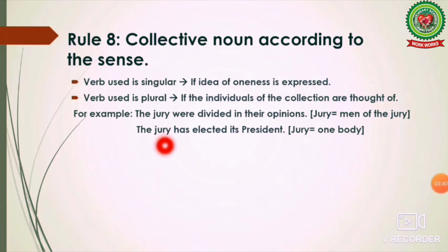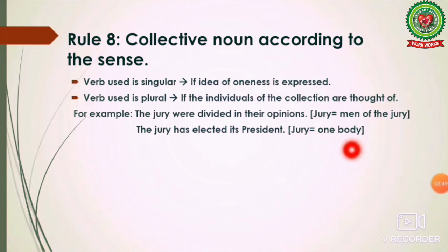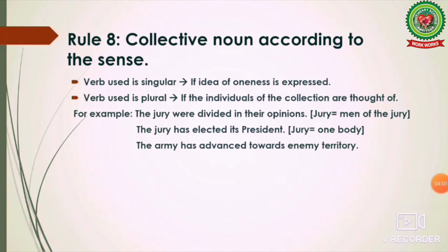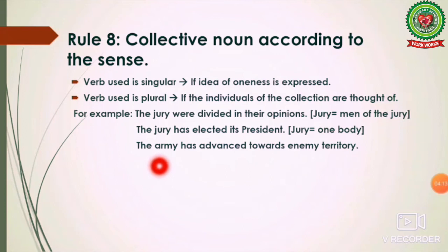'The jury has elected its president.' Here the jury is considered as one body — the idea of oneness is expressed — so we use the singular verb 'has,' not 'have.' Another example: 'The army has advanced towards enemy territory.' Again, the army is considered as one body, so it is a singular subject and 'has' — a singular verb — is used.